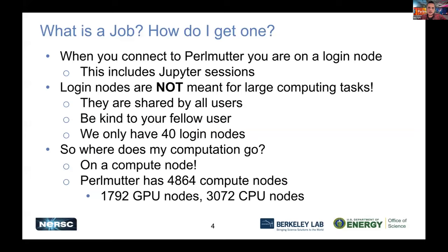So, basic job submission. What is a job? When you connect to Perlmutter, you're on a login node, which is a shared resource — that's also where your Jupyter sessions end up. Those nodes aren't meant for large compute tasks, so instead you should submit a job. We have almost 5,000 compute nodes: a little under 1,800 GPU nodes and a little over 3,000 CPU nodes.